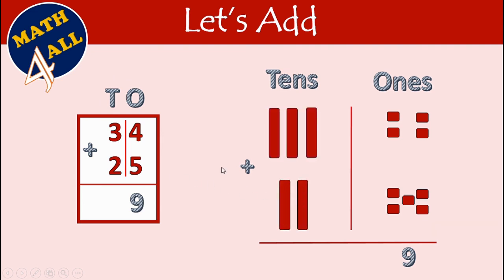Now add the tens place: three plus two. Count after three: four, five. So write five in the tens place. Thirty-four plus twenty-five equals fifty-nine. That was our lesson — thank you.